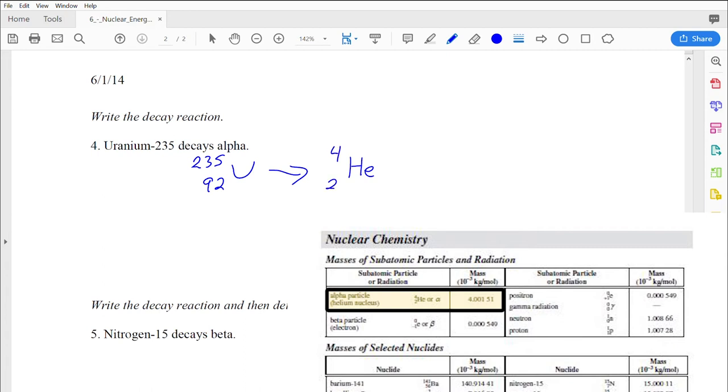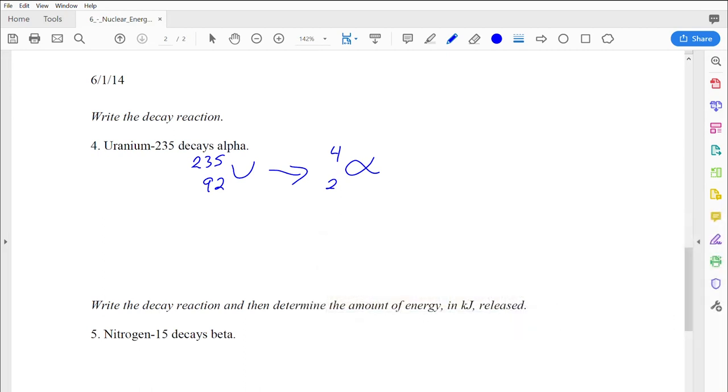Now it says that decays alpha, so it's going to make an alpha particle. The alpha particle is up in the upper left-hand corner of page 8. It looks like this. You can either write it as a helium nucleus, HE, the 4 and 2, or, which I think is a little bit more fun because I feel like I'm really being a physicist when you do this, I'm going to write it using the Greek symbol alpha. Either one is fine.